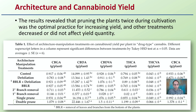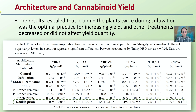Now let's get into the actual data on architecture related to cannabinoid yield. The results revealed that pruning the plants twice during cultivation was the optimum practice for increasing yield, and other treatments decreased or did not affect yield quality. Looking at the different architecture manipulation treatments, we're examining CBGA, CBDA, CBDVA, THCA, THCVA, and CBCA — all in grams per plant. The double prune method had the highest rate of return in grams per plant for all of the cannabinoids listed here.